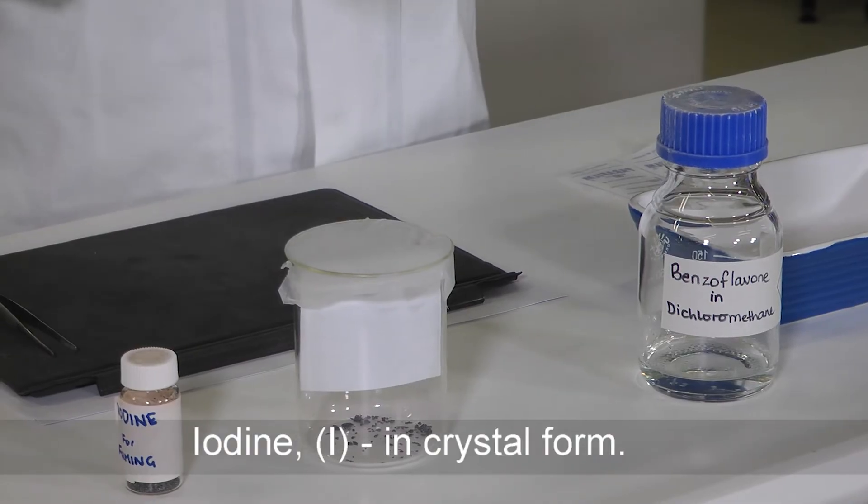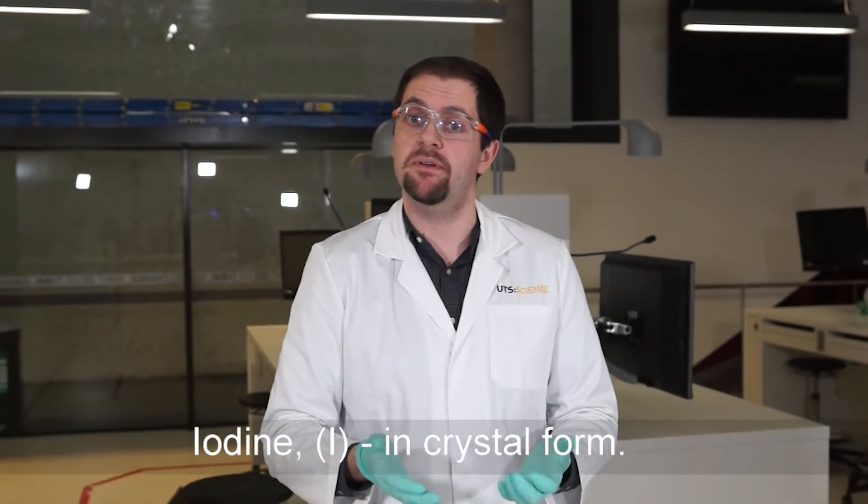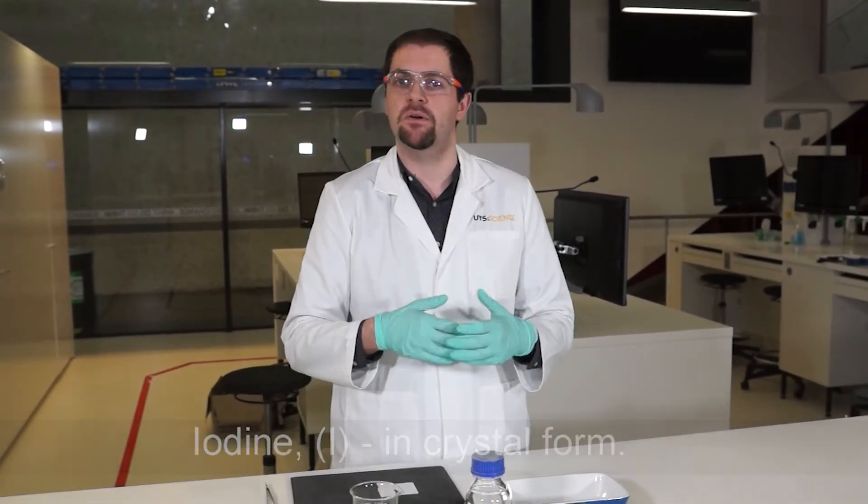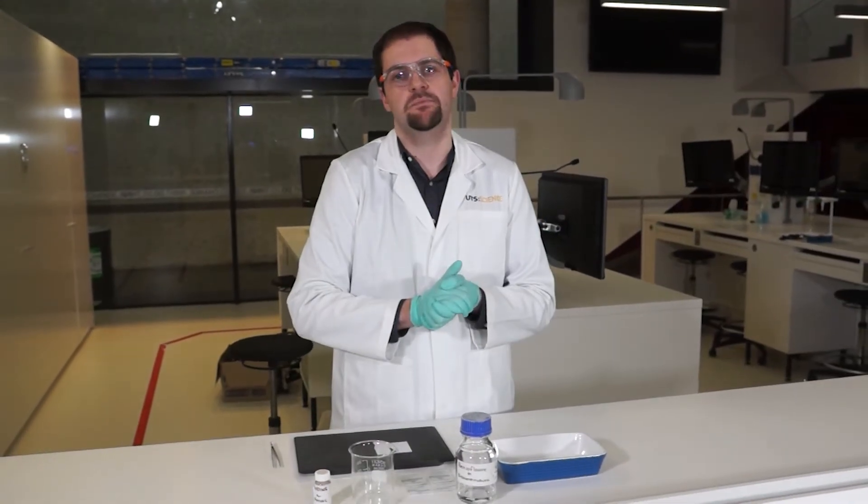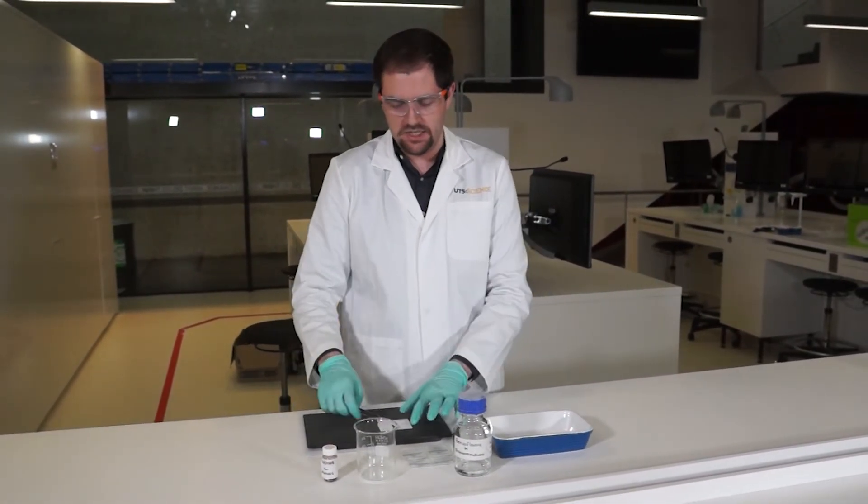What we have here is iodine, which is a solid at room temperature. We can expose a piece of paper that has some fingerprints on it to the iodine solid, and what will happen is the iodine vapor will fume and give us some nice brown finger marks where we've deposited some fingerprints.